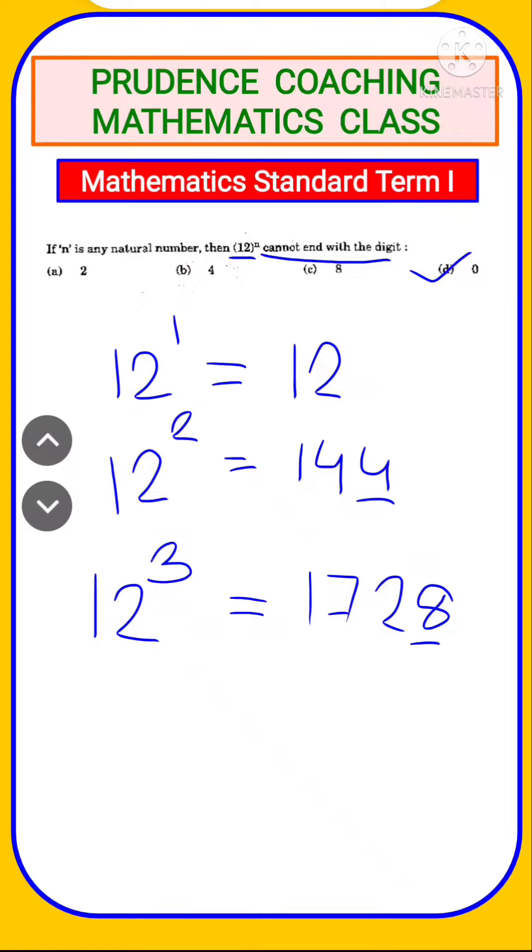Another method of solving this is first you find out the prime factors of 12. You will get here 2 to the power 12, 2 into 3 is 6. That means we are getting 2 to the power 2 into 3.